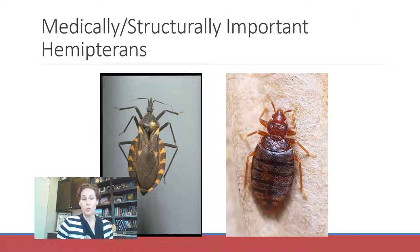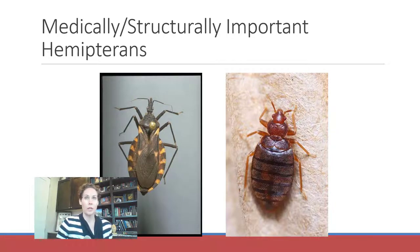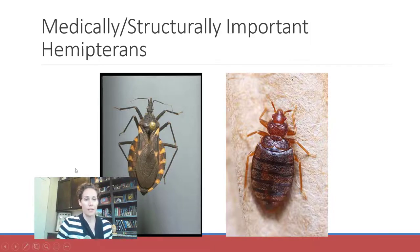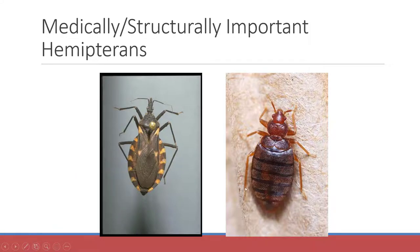Some hemipterans are medically or structurally important. The kissing bug transmits Chagas disease and looks similar to leaf-footed bugs and squash bugs, so don't always assume you've identified it — take a picture and get it identified. Bed bugs are actually true bugs that have lost their wings, so you can't see the triangle on them.